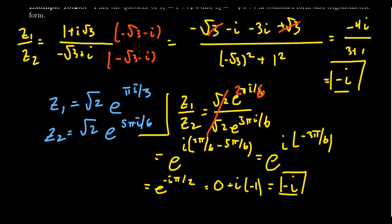The division process is much easier in polar form, though you do need to convert between Cartesian and polar. For a single division, the conversion may feel heavy, but for repeated division — just as repeated multiplication is easier in polar form via exponents — polar form becomes essential. This leads us into roots and radicals, which we'll cover in the next video, where working in polar form is absolutely necessary.